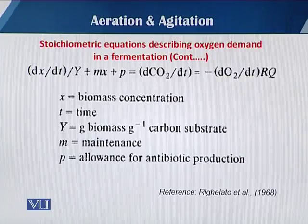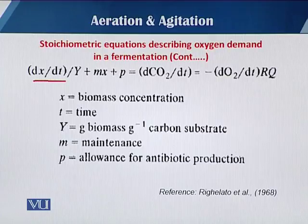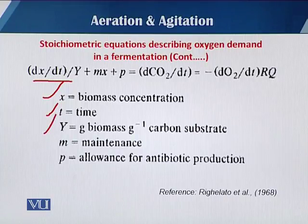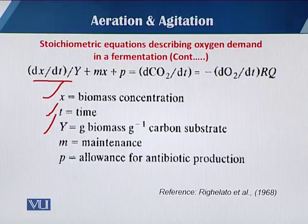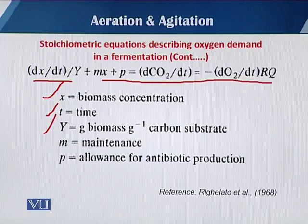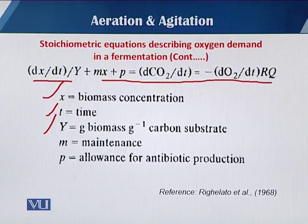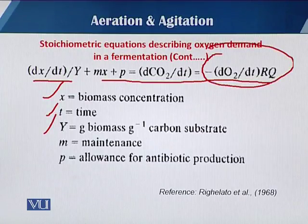An equation reported by Rillet et al. 1968 shows that dX/dt — the change in cell mass over time — divided by the yield Y, where X is the biomass concentration, t is time, and Y is grams of biomass per gram of carbon substrate utilized, plus mX where m is the maintenance coefficient and P is the allowance for antibiotic production. This equation applies to a fermentation process producing an antibiotic, and dCO₂/dt equals the utilization of oxygen in the process.